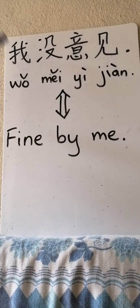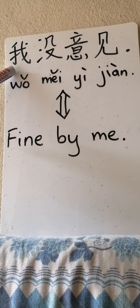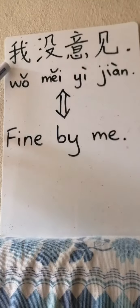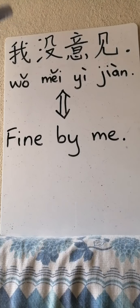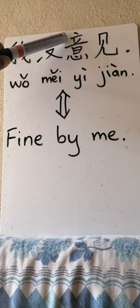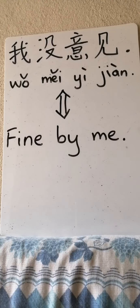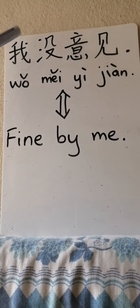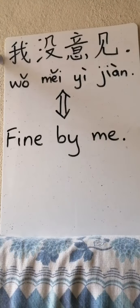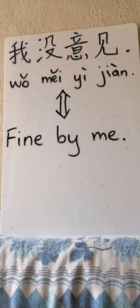Literally, what does it mean if we go word by word? The first word means 'I.' The next can mean 'don't have' or 'none.' 没 (méi) — don't have or none. 意见 (yìjiàn) means 'opinion' or 'ideas.' So: 'I don't have any opinion.' Also means 'fine by me.'